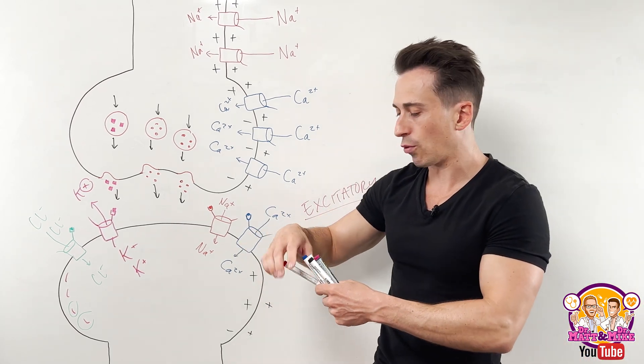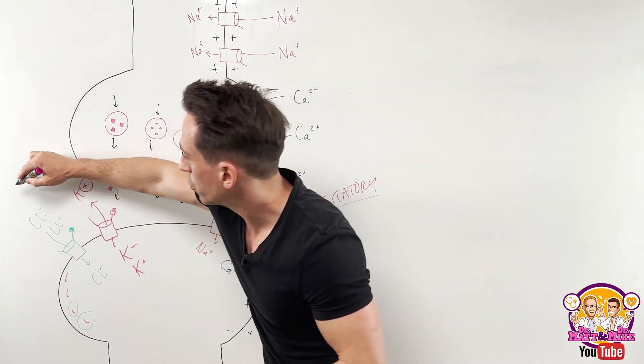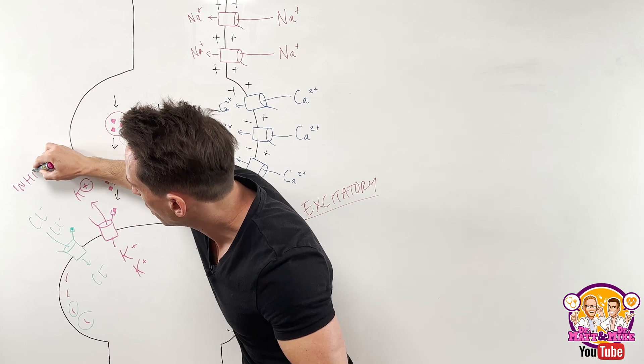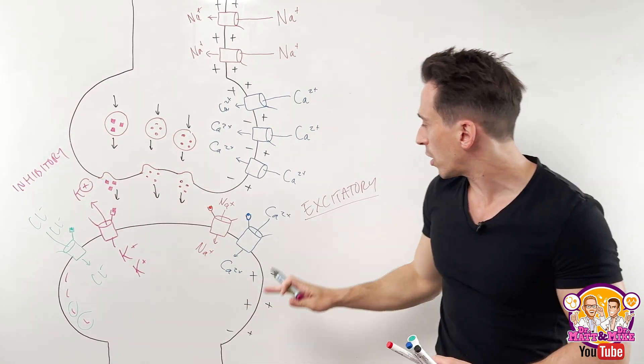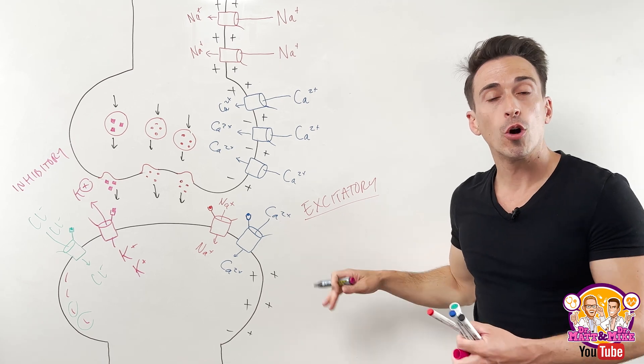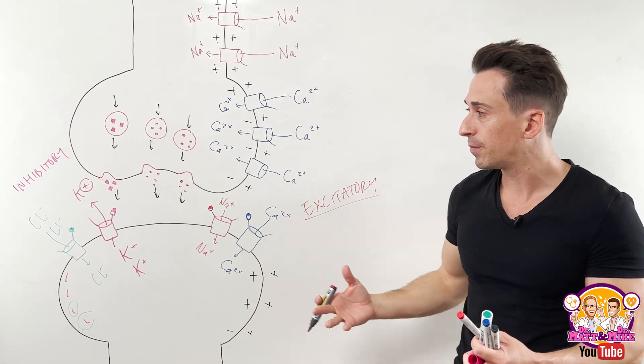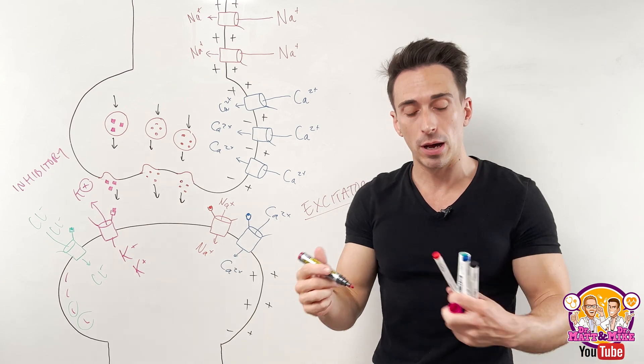If it's an inhibitory neurotransmitter, now maybe your question is, what is an inhibitory neurotransmitter or an excitatory? Excitatory can include glutamate, or if it's muscle tissue, acetylcholine. An inhibitory can be GABA, for example.